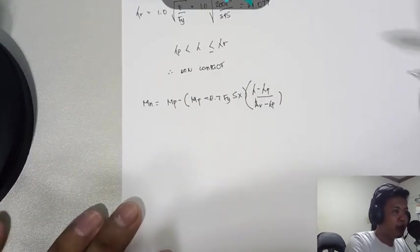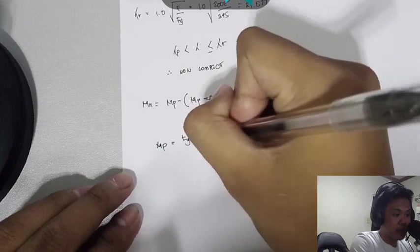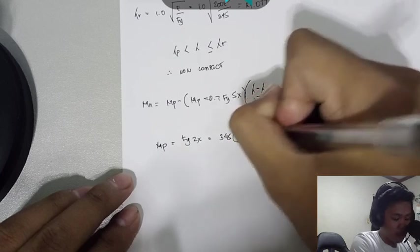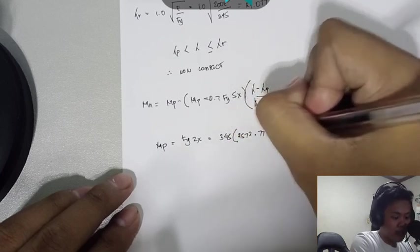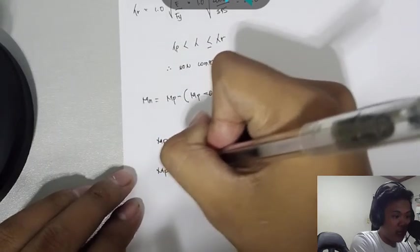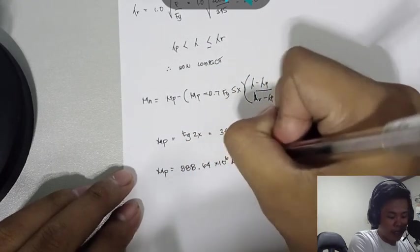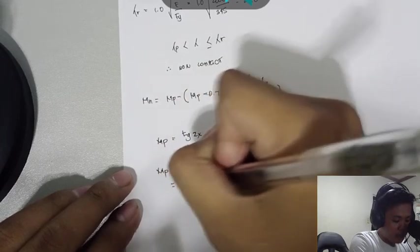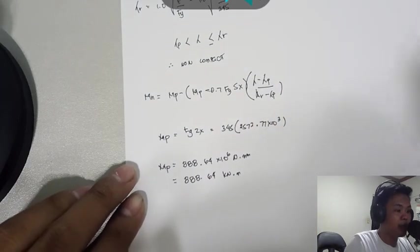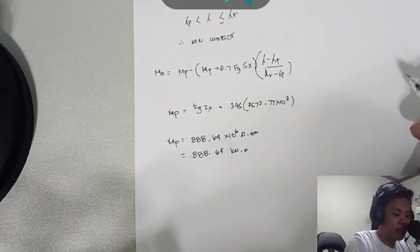Now, let's solve for the value of MP. MP is equal to FY times ZX. It equals 345 multiplied by 2,572 times 10³. We get a value of MP of 888.64 × 10⁶ Newton-millimeter or 888.64 kilonewton-meter.